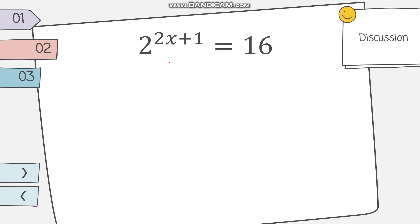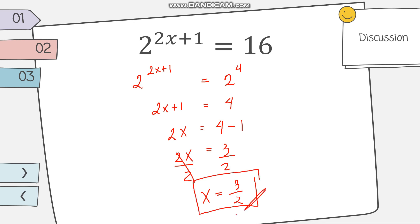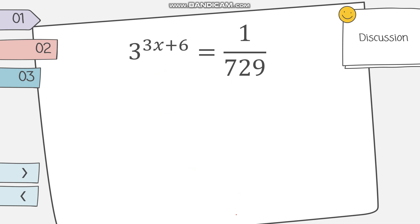Another example: 2 raised to 2x plus 1 equals 16. We need the same base on both sides. Since 16 equals 2 raised to 4, we rewrite it as such. Now the bases are the same, so we set exponents equal: 2x plus 1 equals 4, giving 2x equals 3, and dividing both sides by 2, x equals 3 over 2.